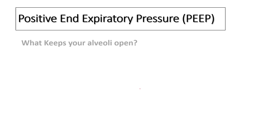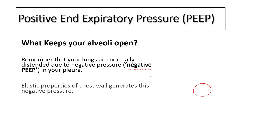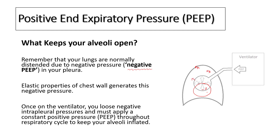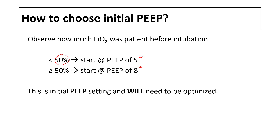Positive end-expiratory pressure, or PEEP. The question to ask yourself is: what keeps your alveoli open? You will realize that intrapleural pressure is negative. Right now, as you listen to this, you have a negative pressure inside your lungs keeping those alveoli inflated, generated from the elastic chest wall. Once on the ventilator you lose all that negative pressure, so you require a positive pressure to keep your lungs inflated. How do you choose initial PEEP? PEEP depends upon how much oxygen the patient was requiring before intubation. If the patient is requiring less than 50% FiO2, you can start at a PEEP of 5; if requiring more than 50%, you can start with a PEEP of 8. Understand that this is the initial PEEP setting and will need to be optimized.